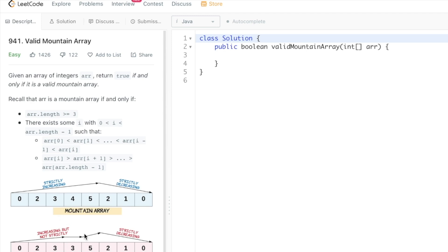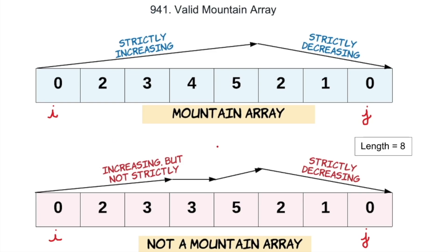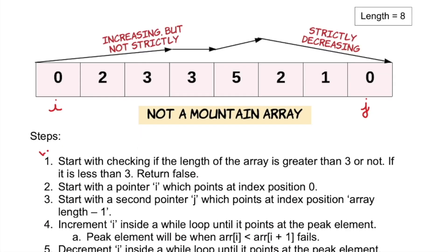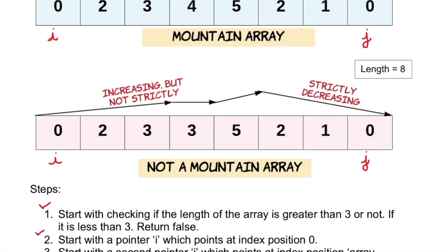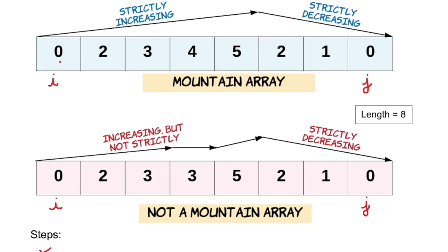Let's look at the example and see how the logic can be implemented. First, we check the length of the array — if it's less than three, we return false, since a valid mountain array must have length greater than or equal to three. Here the length is eight, so this condition is satisfied. Next, we create a pointer i pointing at index position zero.